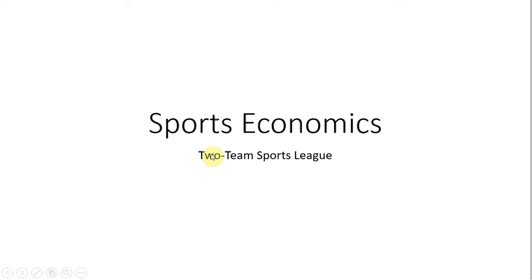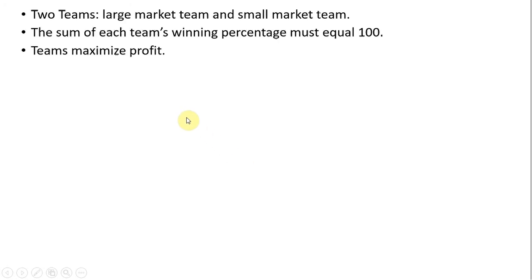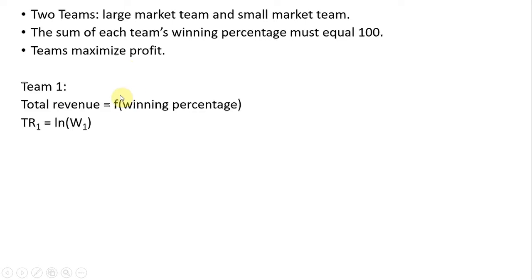Hello, in this video we're going to do some sports economics, looking at the model of a two-team sports league. There are only two teams in this league: a large market team and a small market team. The sum of each team's winning percentage must equal 100. These two teams just play each other over and over again, and the teams will assume maximized profit.